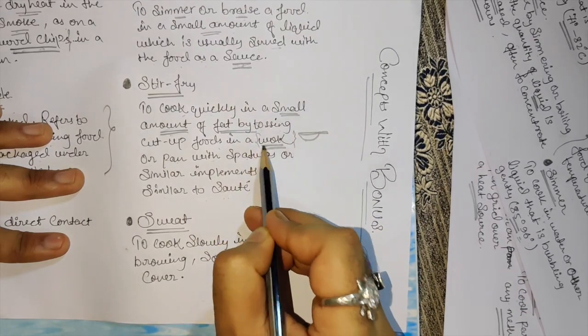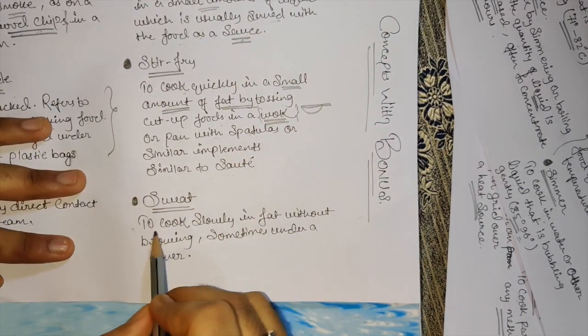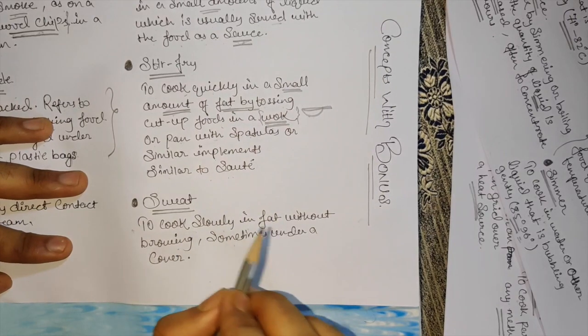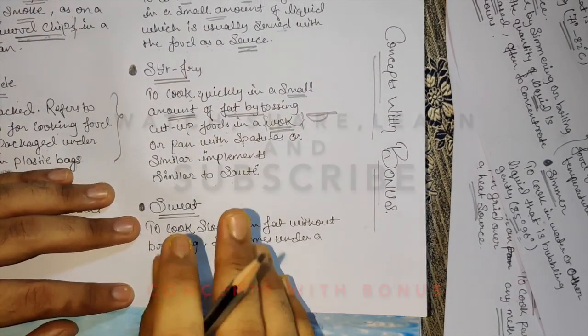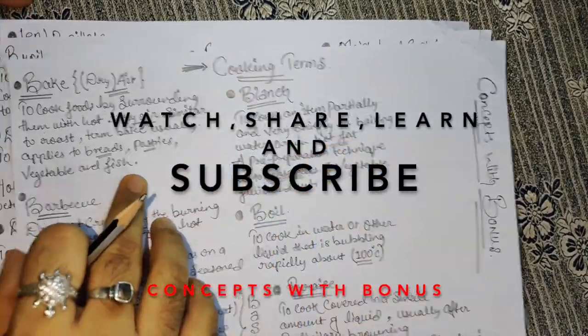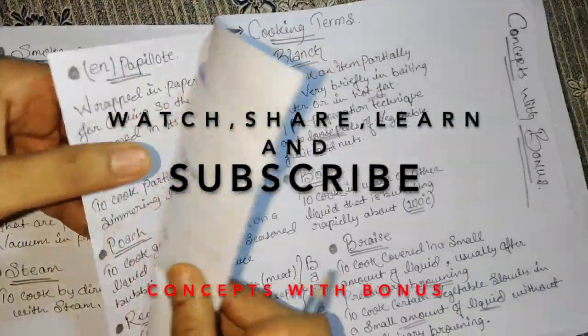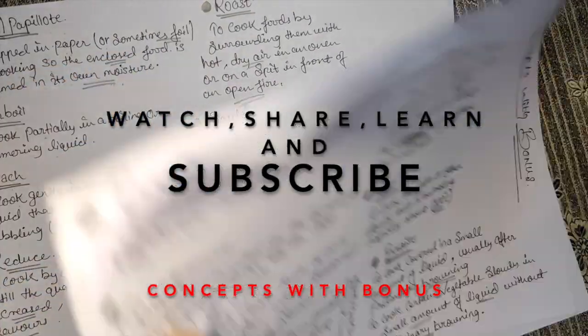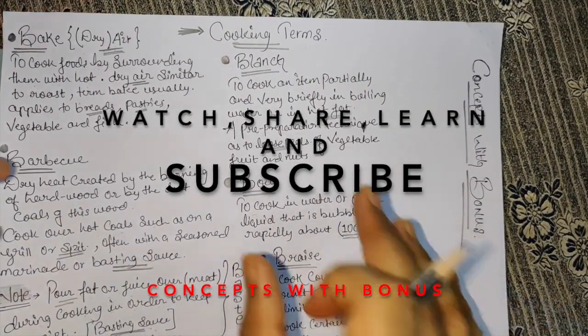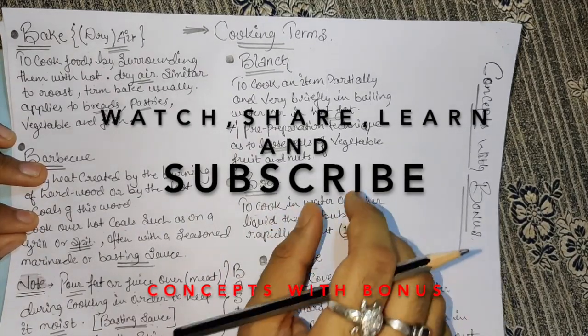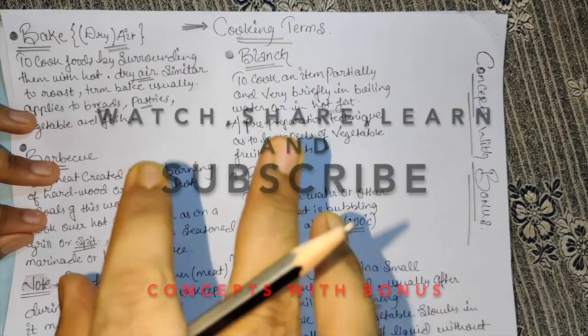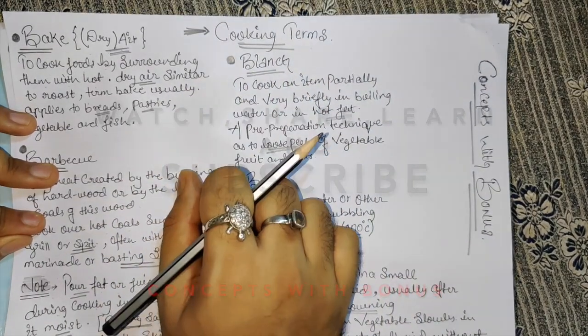Sweat - to cook slowly in fat without browning, sometimes under cover. It's not about browning, it's just sweat. I hope you guys understand all the cooking terms I shared with you in this video. I'll explain the scientific reasons. Cooking is a science and an art. Don't forget to subscribe and please do share. Thank you, see you, bye-bye.